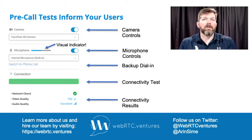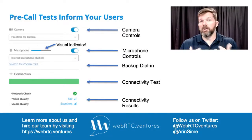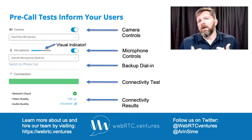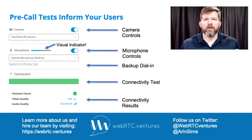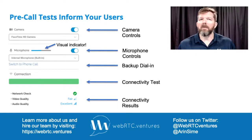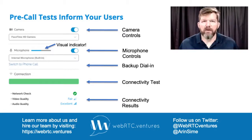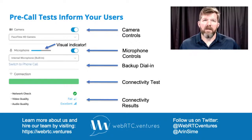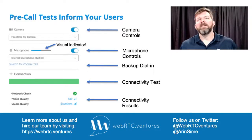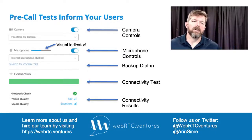Behind the scenes we're measuring the actual strength of the user's connection. We could show them those actual numbers, but most people don't know what those numbers mean — as long as we tell them they have a good enough connection for a fair or excellent video call, that's sufficient for the user. However, behind the scenes we might want to store that more detailed connection strength information as well.